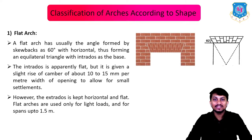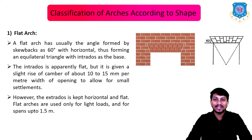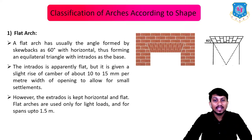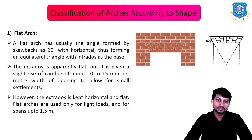A flat arch usually has the angle formed by skewbacks as 60 degrees with horizontal, thus forming an equilateral triangle with the intrados as the base. The intrados is apparently flat but is given a slight rise or camber of about 10 to 15 mm per meter width of opening to allow for small settlements. The extrados is kept horizontal and flat. This flat arch is used only for light loads and spans up to 1.5 meters.